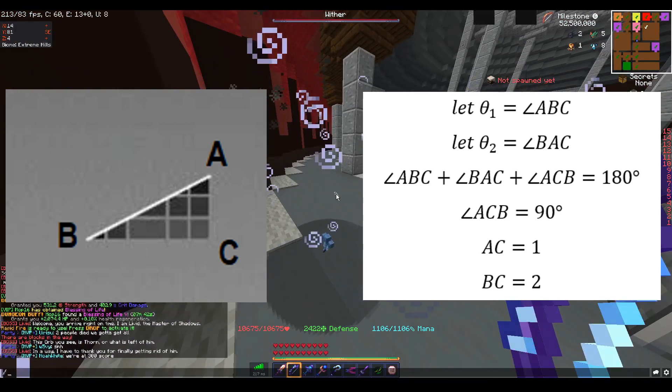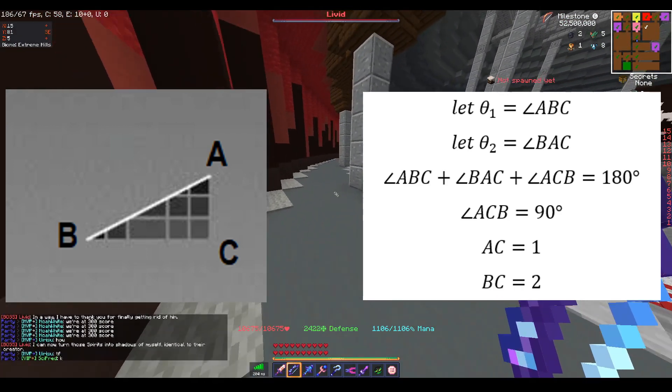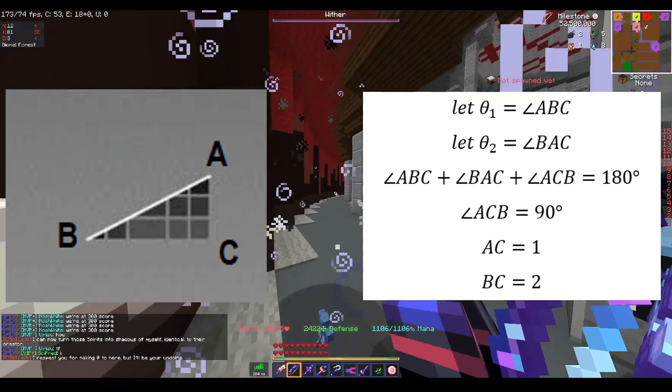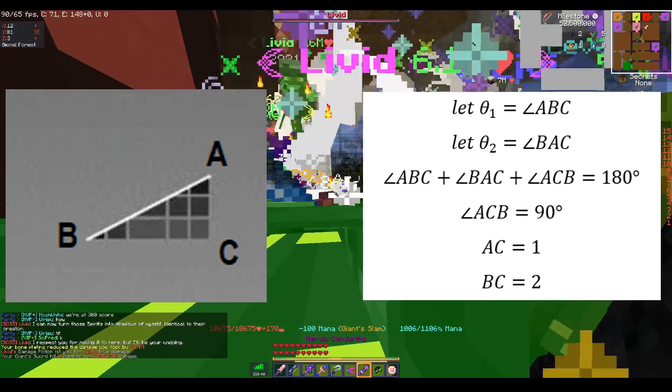You may recall that the sum of the interior angles of a triangle is always 180 degrees. And since this is a right triangle, the angles that are not right angles are complementary.